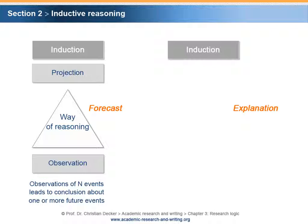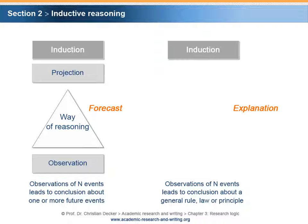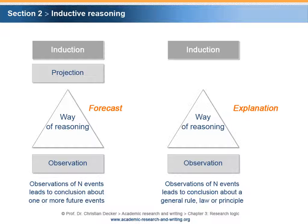For an explanation, an observation of N events leads to a conclusion about general rule, law or principle. Again, the starting point is the observation which will be used in order to come up with a more generalized conclusion.